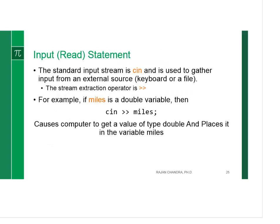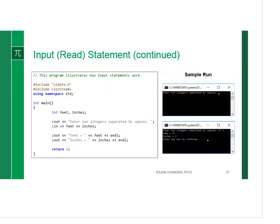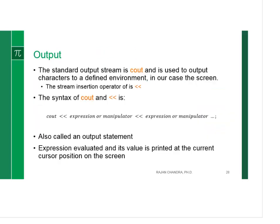We always read the data using the input command, which is called cin. Watch the direction of the extraction operator. We can read two values like the way it is shown here: cin, feet, inches. The first value that we read goes to feet. The second value that we read goes to inches. Here is an example that shows how this works.